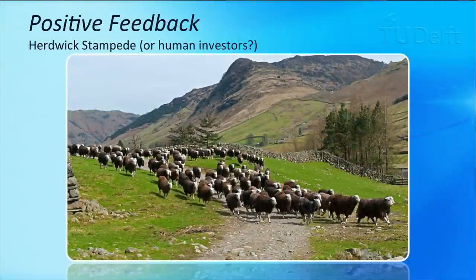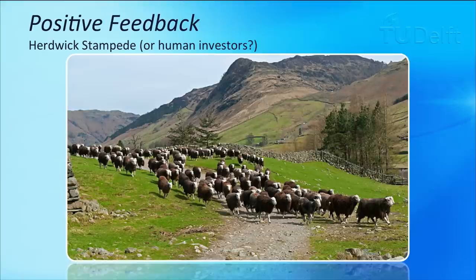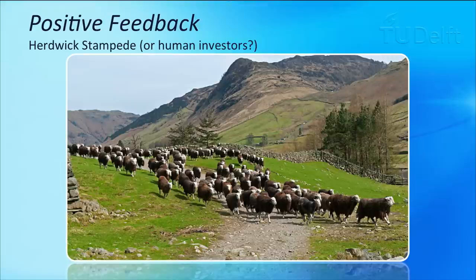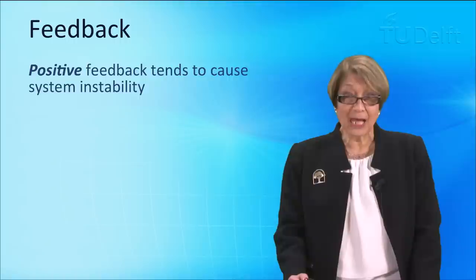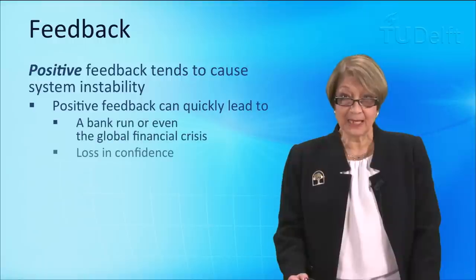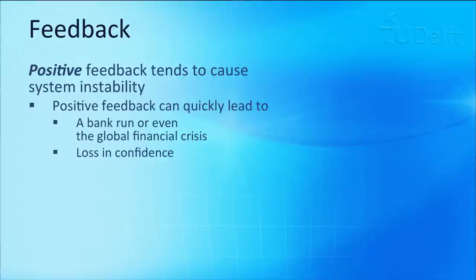Now, this is a stampede. Imagine what happens when a few sheep are frightened. They start running. The faster they run, the more they panic. The more they panic, the faster they run. The first few sheep that started will then attract other sheep and more sheep will follow. And then you can see what actually happens. You get a stampede. So, it is actually making the system unstable. So, positive feedback tends to cause system instability.